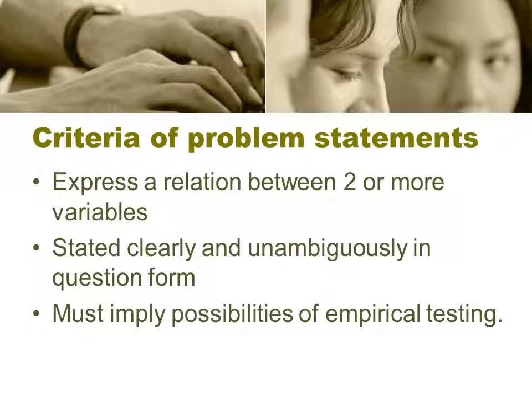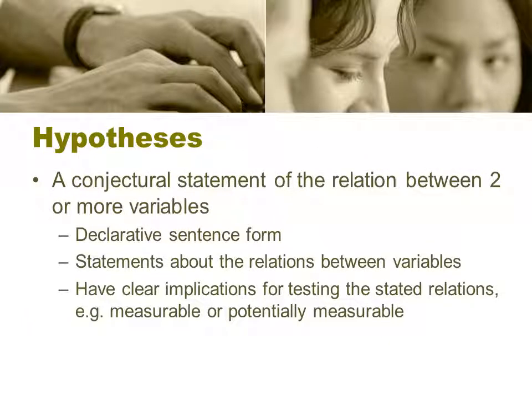There are some criteria for a problem statement. It must express a relationship between two or more variables, be stated clearly and unambiguously, and can or cannot be in question form — but it must imply the possibility of empirical testing. You have to have operational definitions of the concepts of interest included. Hypotheses take it a step further and tell us what we think the relationship between those two variables is — a declarative sentence with clear implications for testing the stated relationship, including measurable or potentially measurable differences expected.